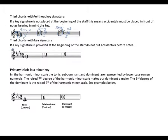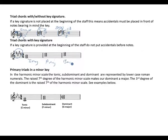Triads with key signatures: if a key signature is provided at the beginning of the staff, do not put accidentals before notes. Using the same example but with a key signature at the beginning of the staff — the tonic is E major, then A major as our subdominant, B major as our dominant. All these notes are affected by the key signature. So use key signatures if necessary, but when a key signature is provided at the beginning of the staff, do not put accidentals in front of the notes.